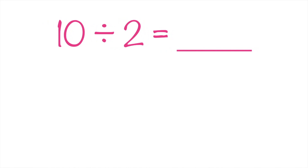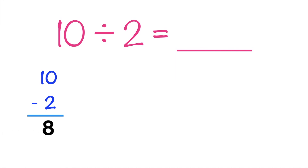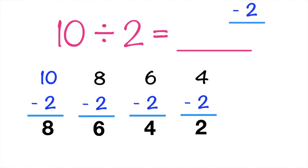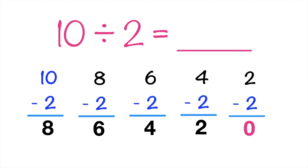How about if we have this? 10 divided by 2 equals blank. Let's use the repeated subtraction to find the quotient. 10 minus 2 equals 8. Then, 8 minus 2 equals 6. Then, 6 minus 2 equals 4. 4 minus 2 equals 2. Then, 2 minus 2 equals 0. So, again children, division is repeated subtraction. You subtract the numbers as many times as you can until the difference becomes 0. Since we get the difference 0, we can now write the quotient. Remember, the quotient is the number of times you subtracted the numbers. So, what is the quotient? Good job! It's 5.